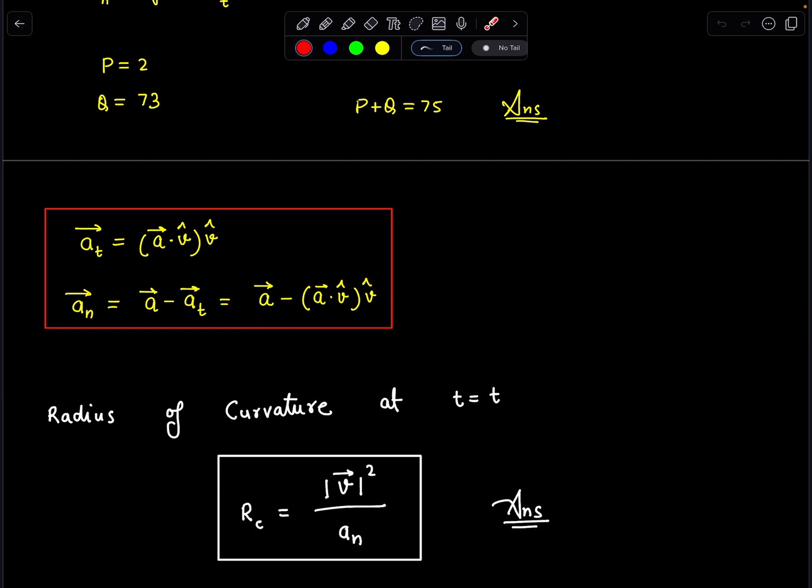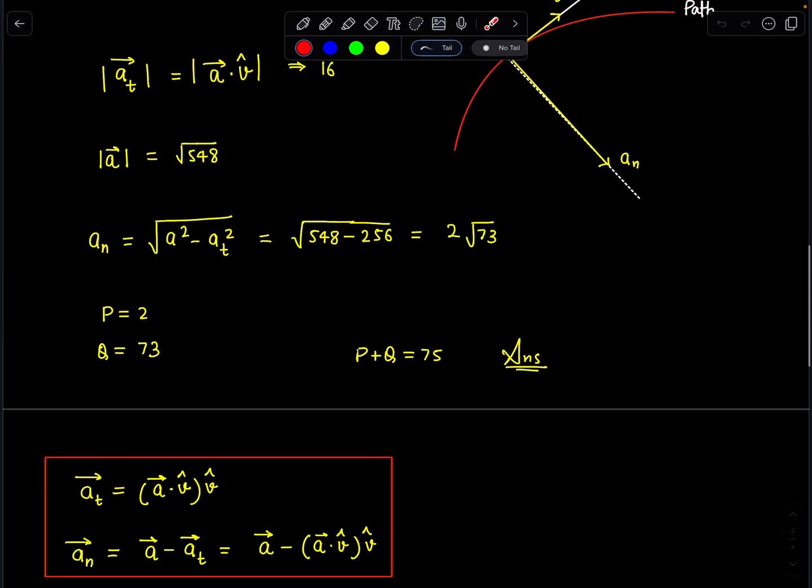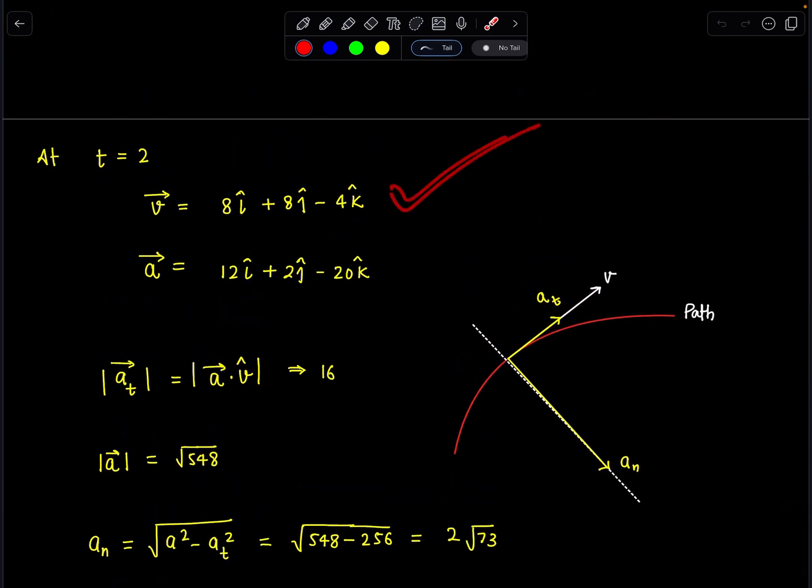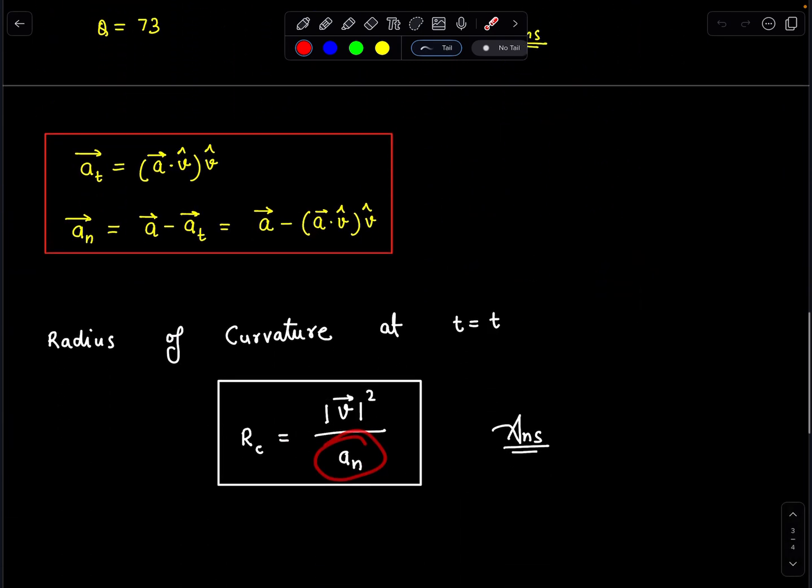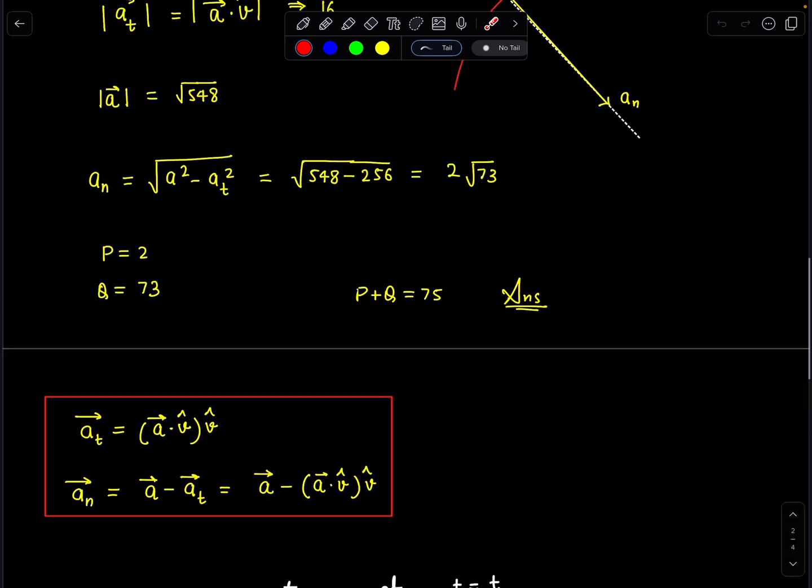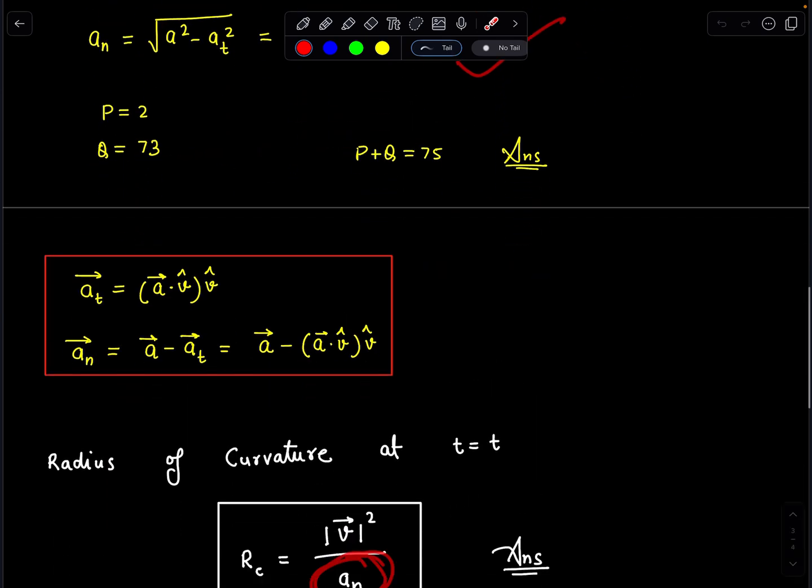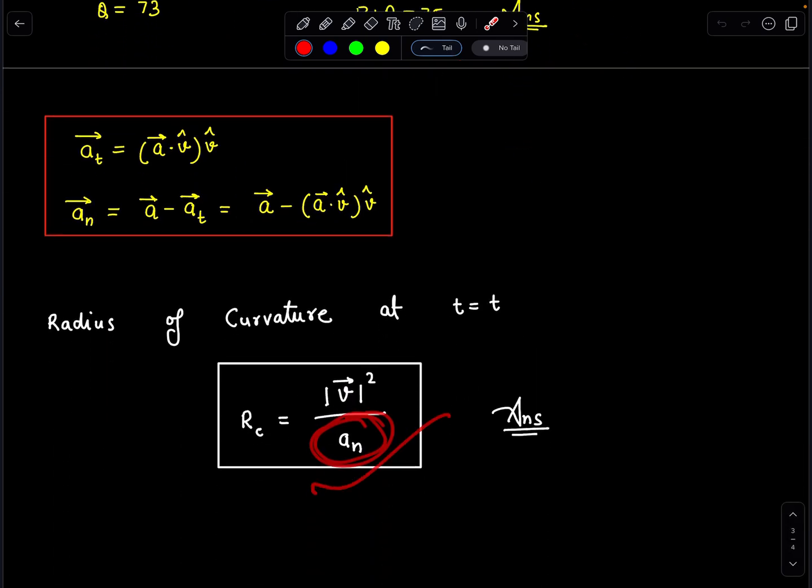Another extension of this problem can be radius of curvature at any time t. So I can write this radius of curvature as speed squared divided by a_normal. So we have vector v. So we know that v squared part at the same time we know a_normal which we have calculated. So if you substitute these values we can find out radius of curvature in such situation as a function of time.